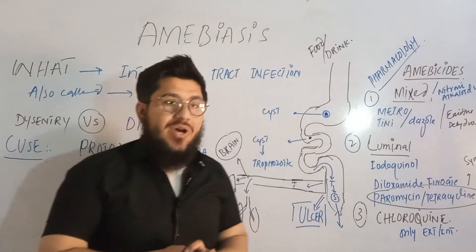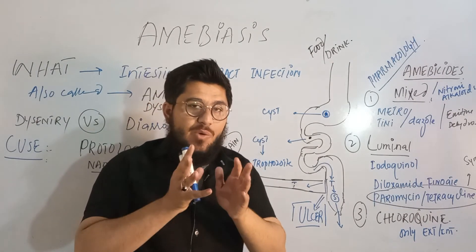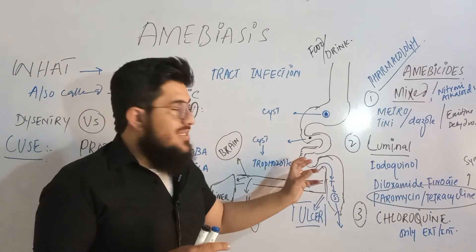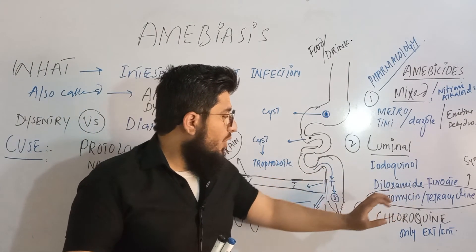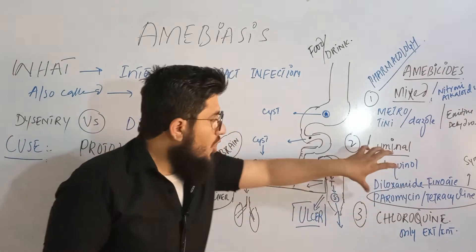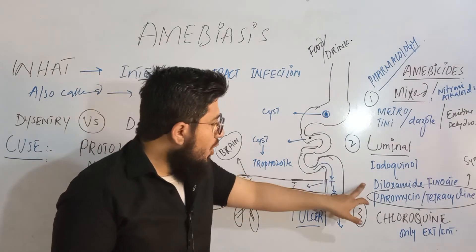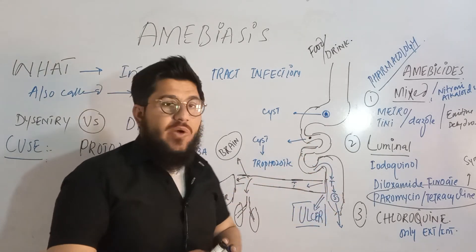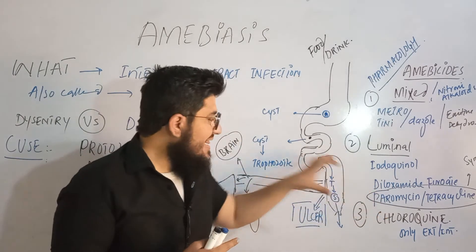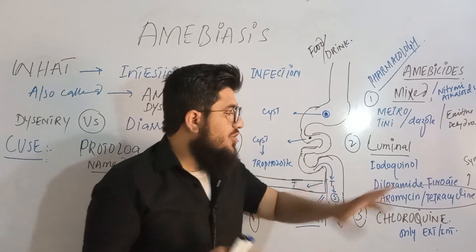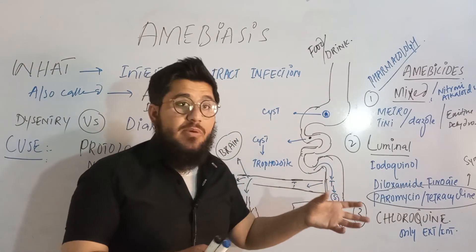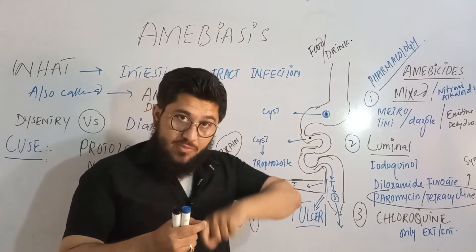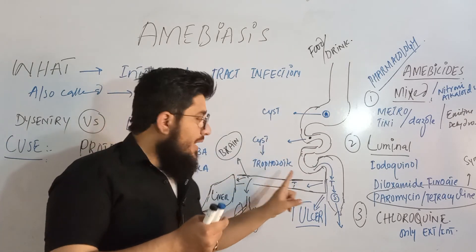The luminal drugs act only within the intestinal lumen. In this class we have iodoquinol, diloxanide furoate, paromomycin, and tetracycline. Iodoquinol and diloxanide furoate destroy the trophozoites that form from cysts in the intestine. Paromomycin and tetracycline are antibiotics that kill the bacteria which are helping or supporting these protozoans within the intestine.